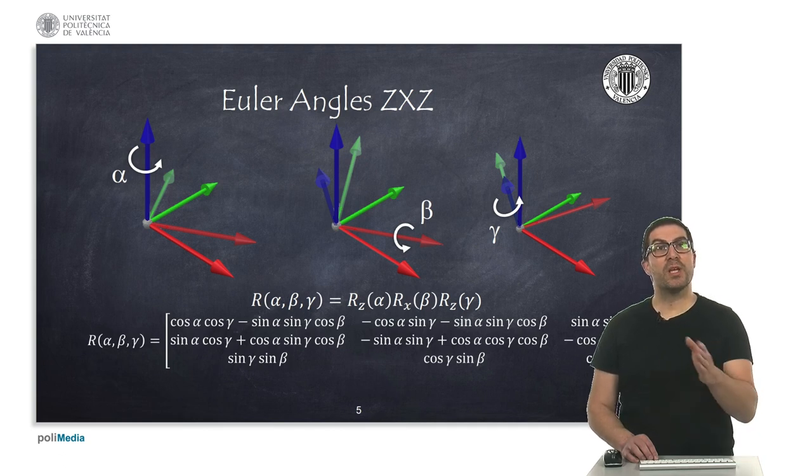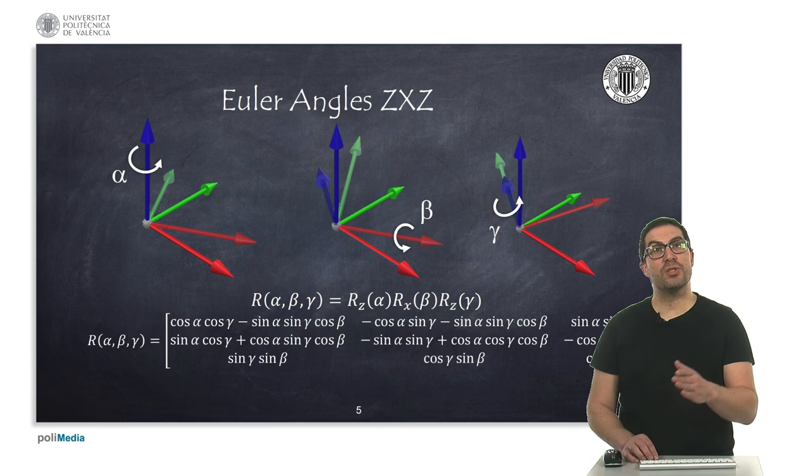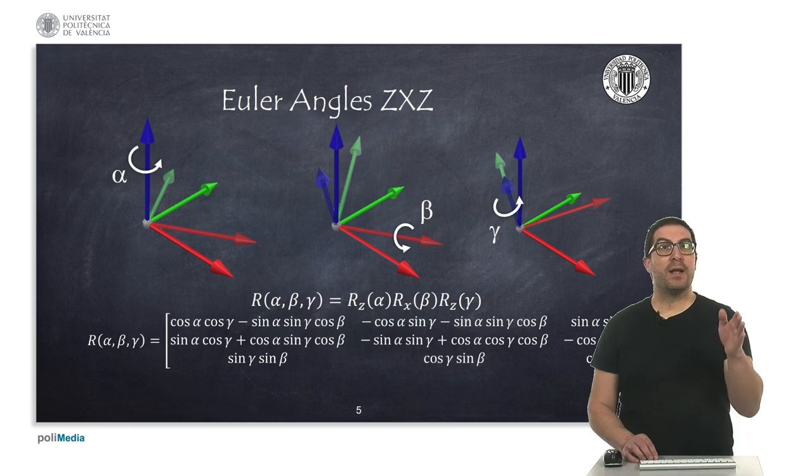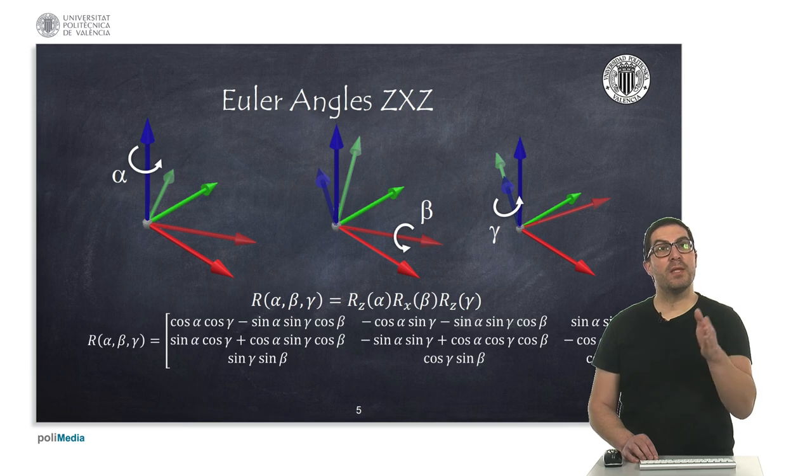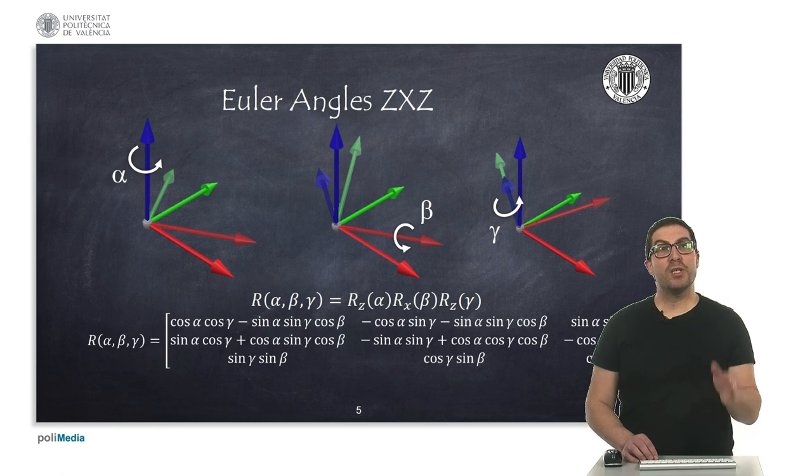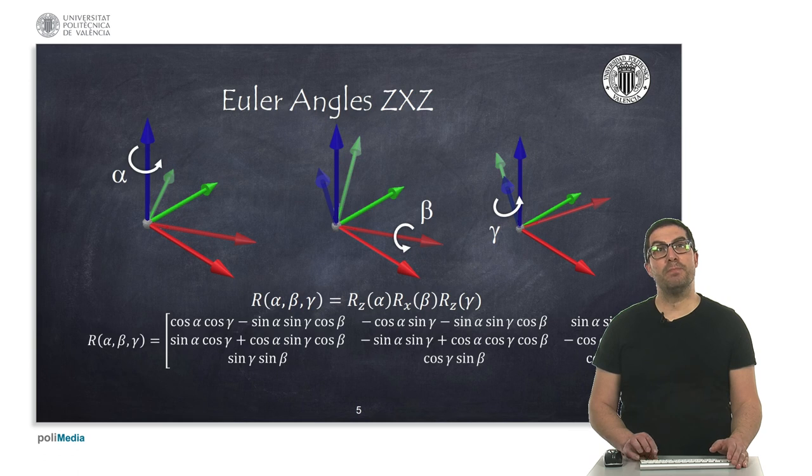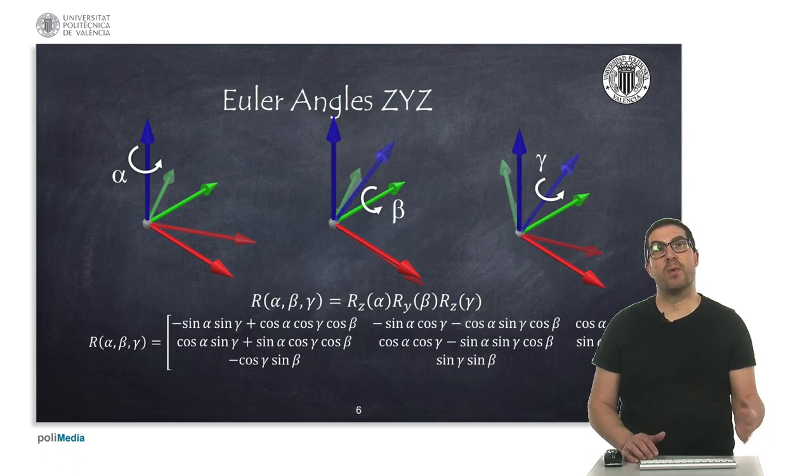So this implies three consecutive rotations, or the multiplication of three consecutive rotation matrices as shown in the slide. Because they are done in the mobile reference frame, they need to be post-multiplied, as we saw previously in the rotation matrices video. So this is the analytic expression in this case for this Euler angle representation.